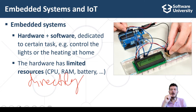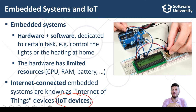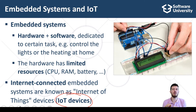Internet-connected embedded systems are known as Internet of Things devices, or IoT devices. IoT is the concept of Internet-connected or cloud-connected devices which can be controlled remotely. IoT devices collect data from their sensors and other sources and upload this data to an IoT cloud or server. The IoT cloud or server can also send commands to IoT devices to adjust and control their behavior — for example, an air conditioner connected to an IoT cloud, controlled through a smartphone.